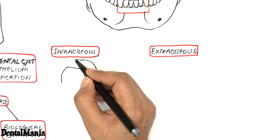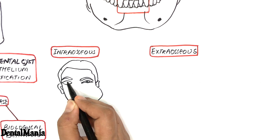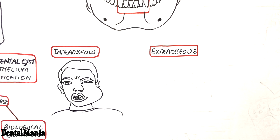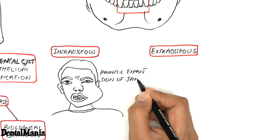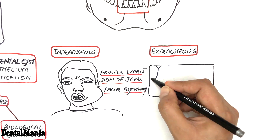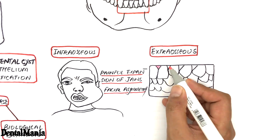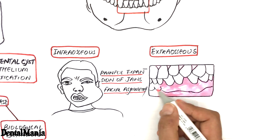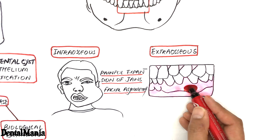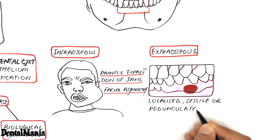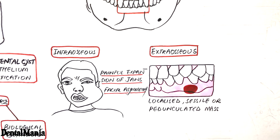The cyst arises either within the bone — intraosseous — or within the gingival soft tissue, referred to as extraosseous and peripheral. If present within the bone, the cyst causes intrabony painful expansion of the jaws resulting in facial asymmetry. About 5–17% of all cases are extraosseous, appearing as localized sessile or pedunculated gingival masses.